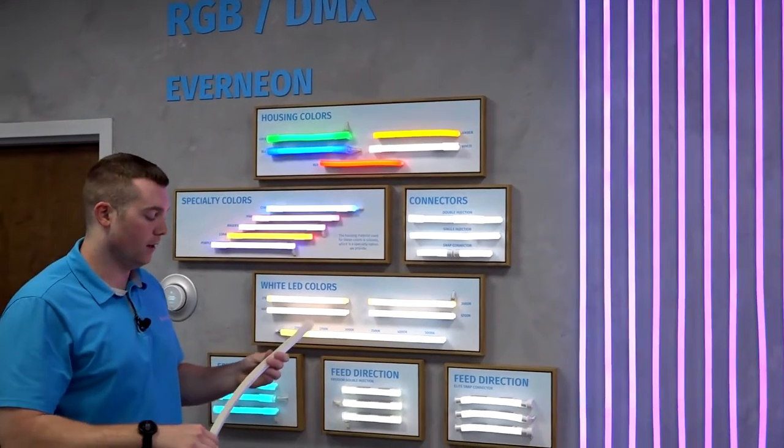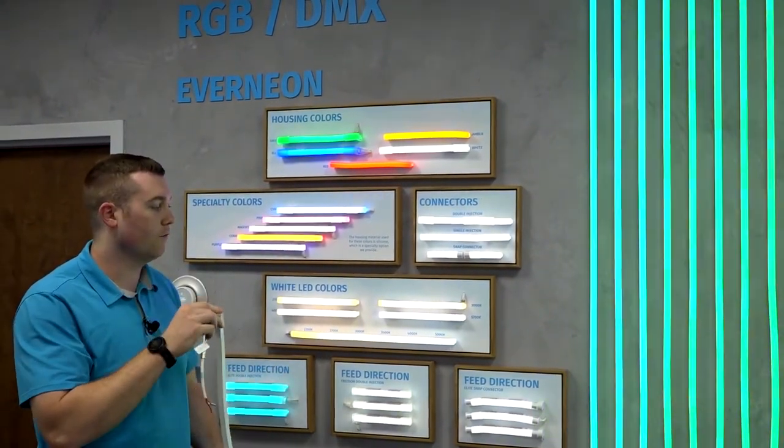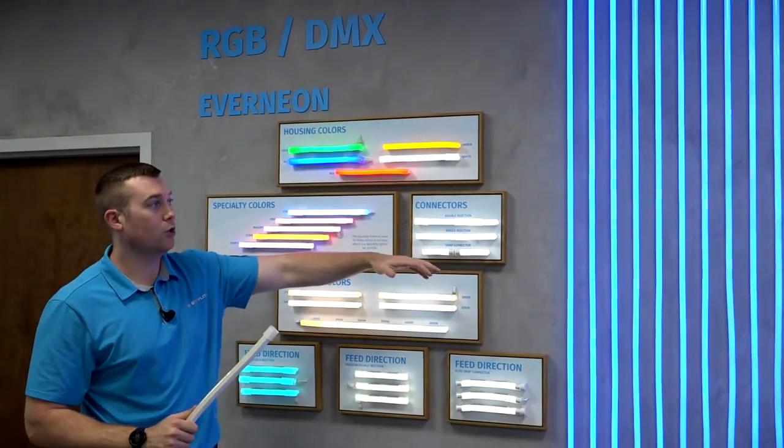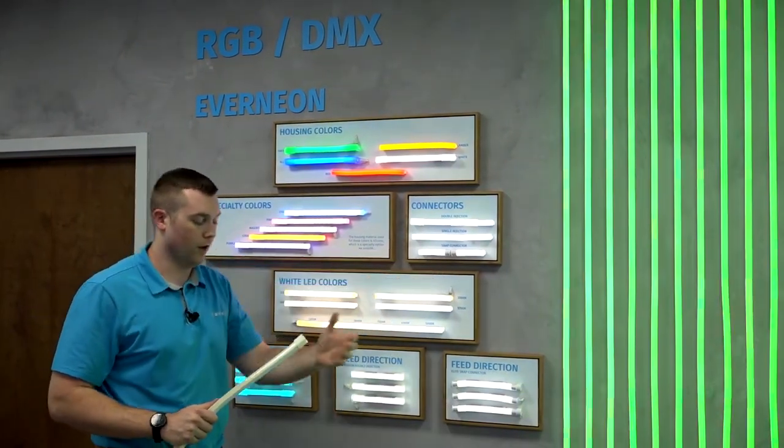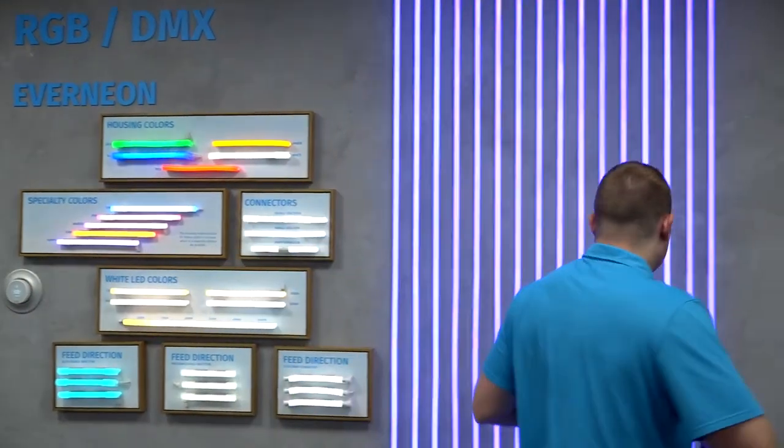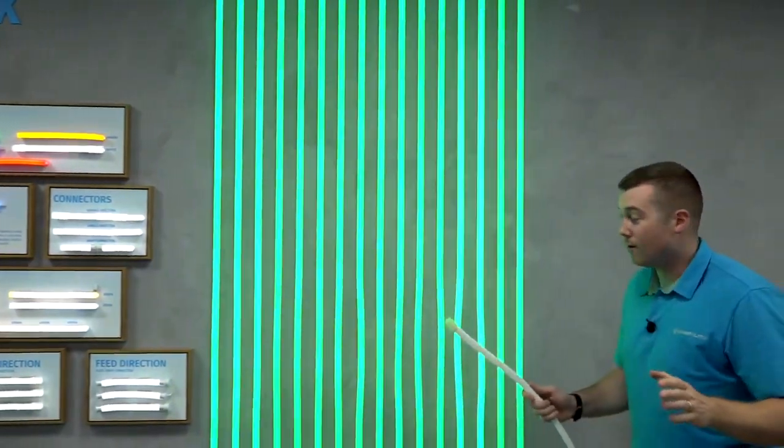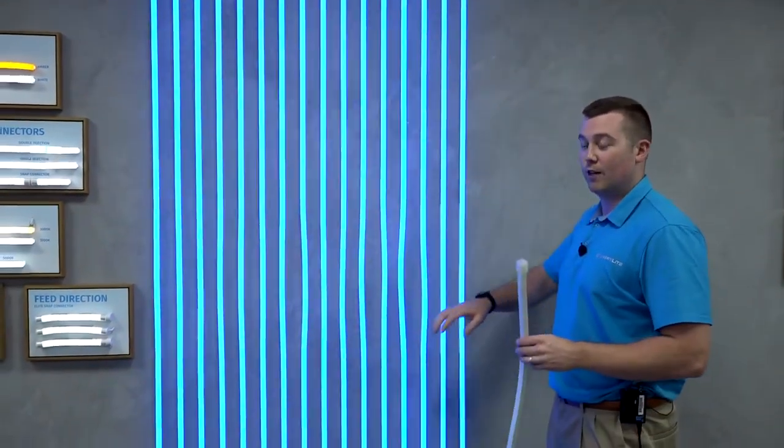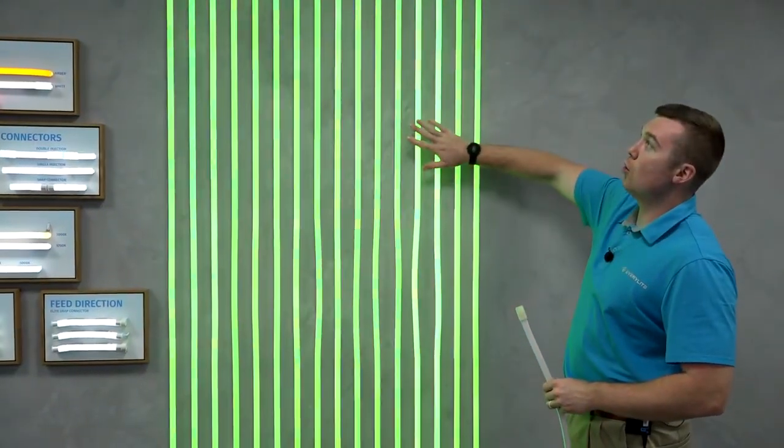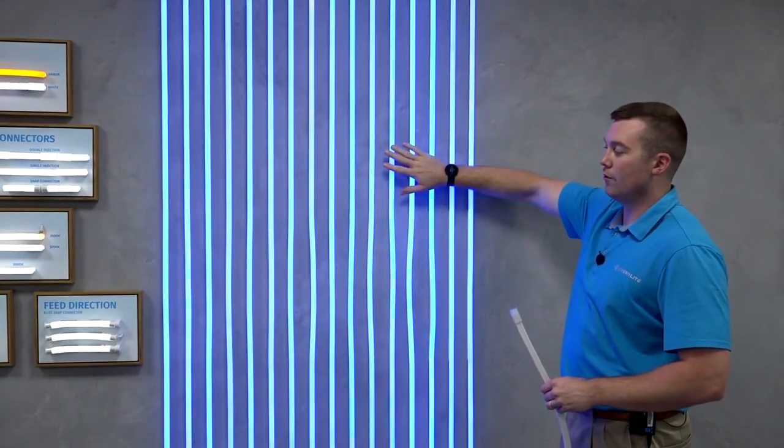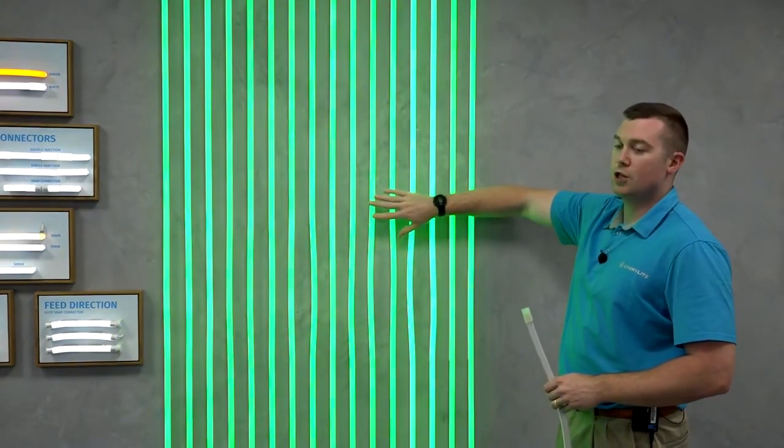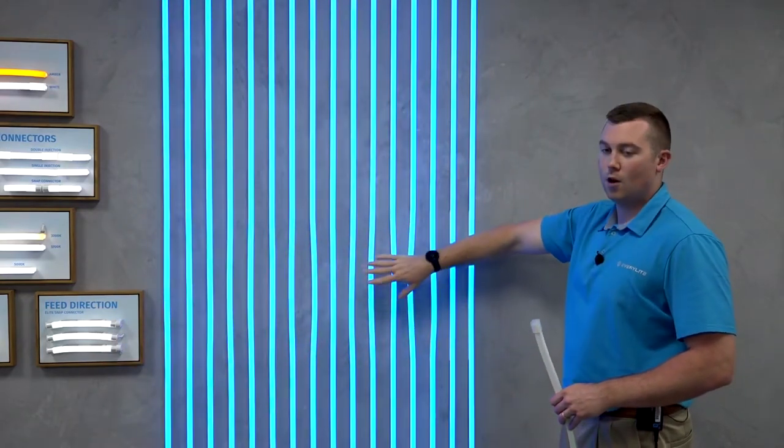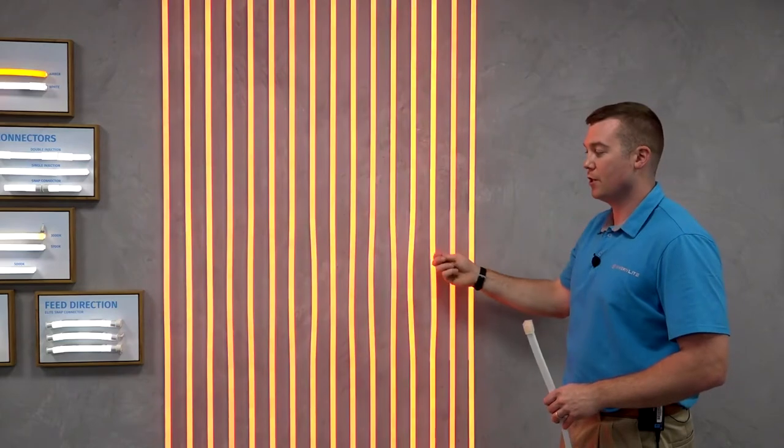That covers the general synopsis of the connectors. What I'm going to do is segue from that into the RGB products that we offer as well. This is where it really starts to get exciting, talking about the RGB stuff, something that Everlight specializes in. This wall behind me, it can do a multitude of features. Currently, it's in an RGB configuration. This product is available in RGB, RGBW, DMX and SPI configurations.